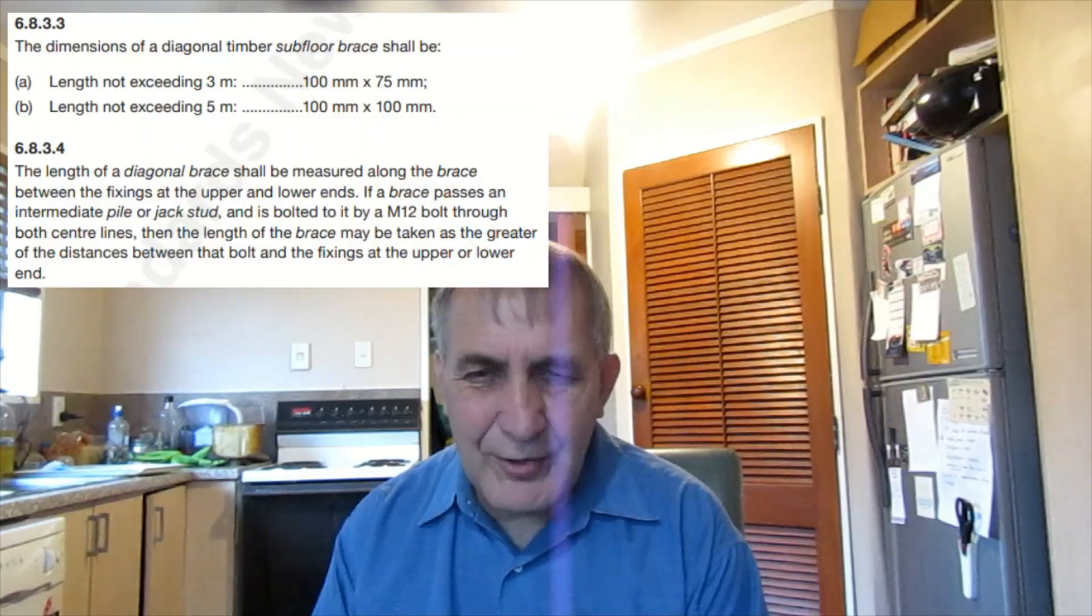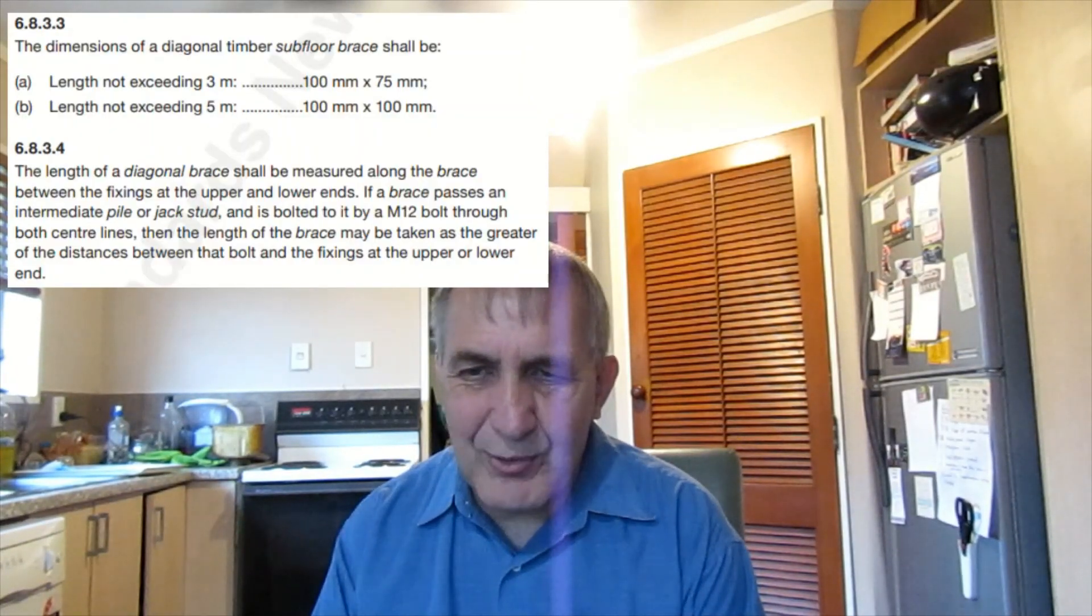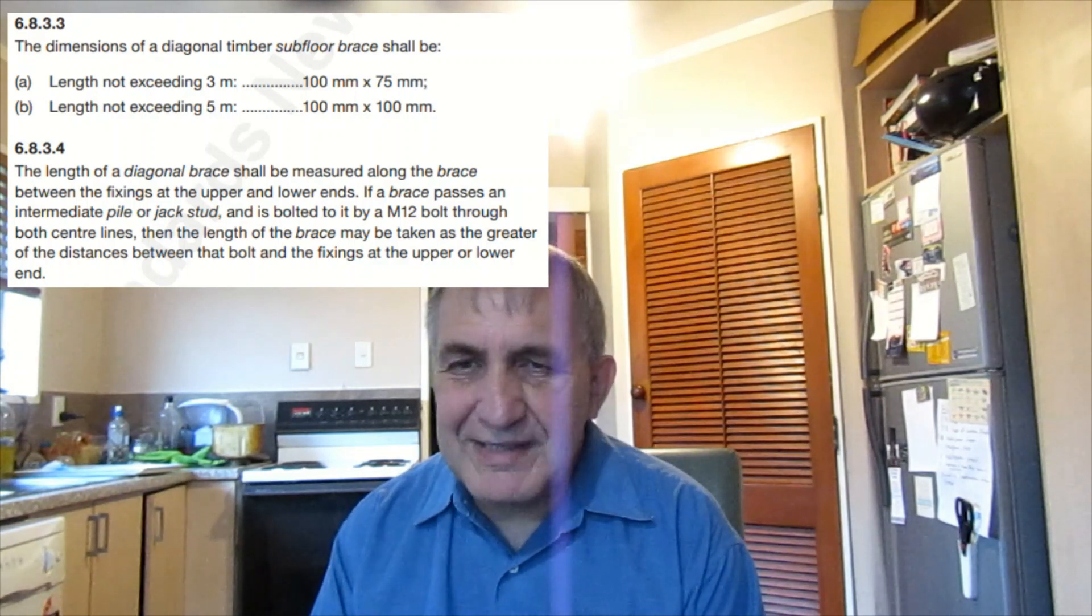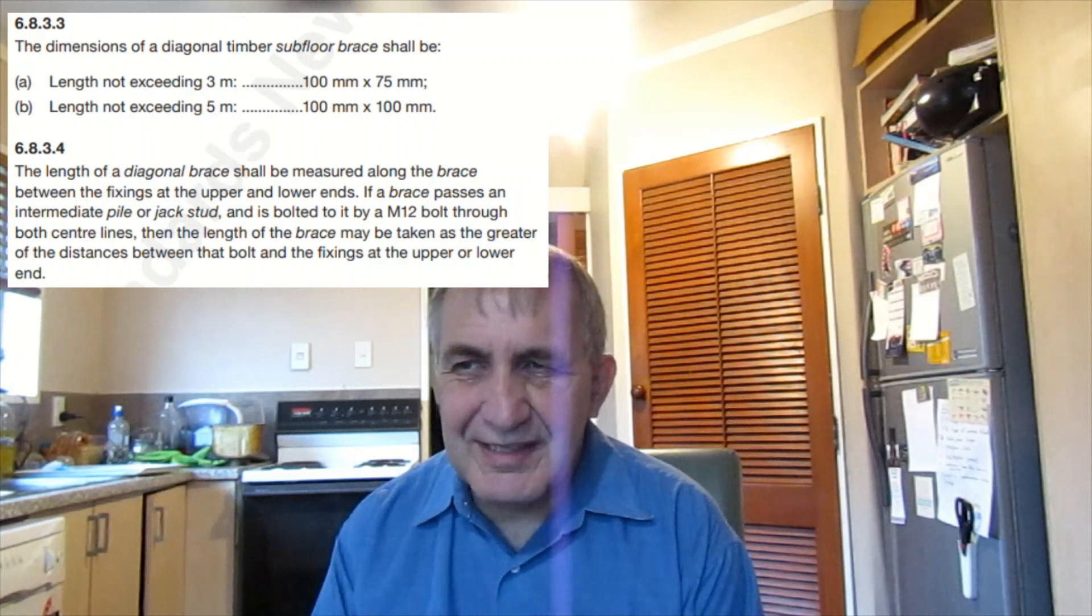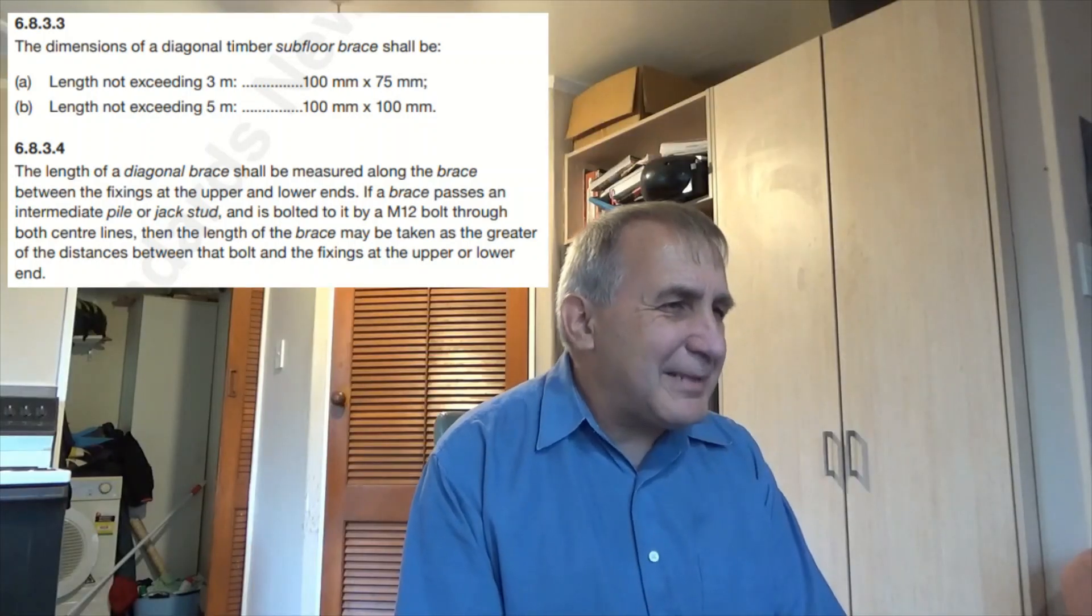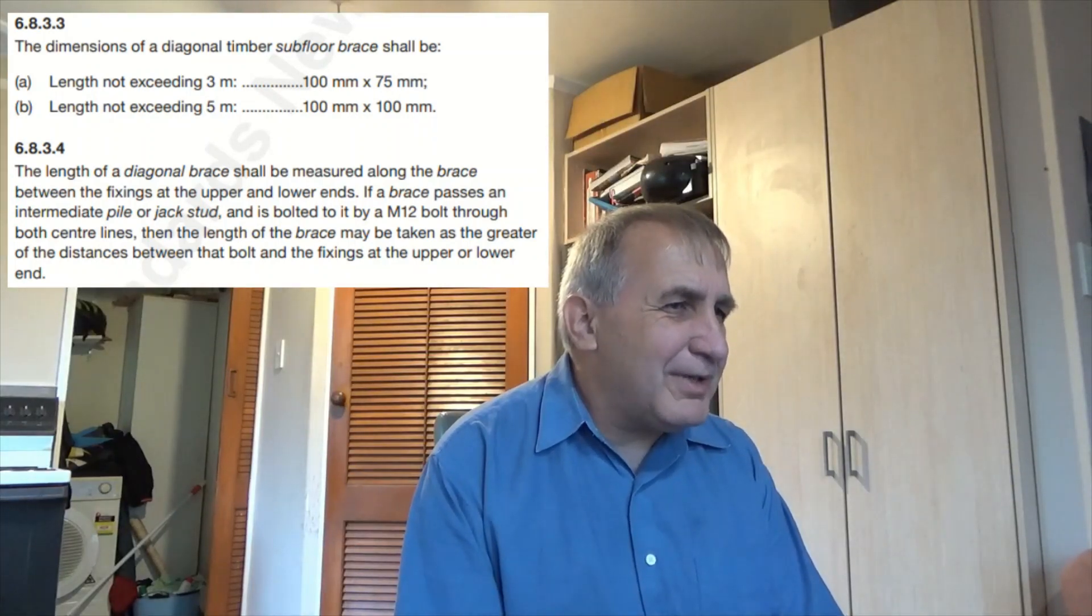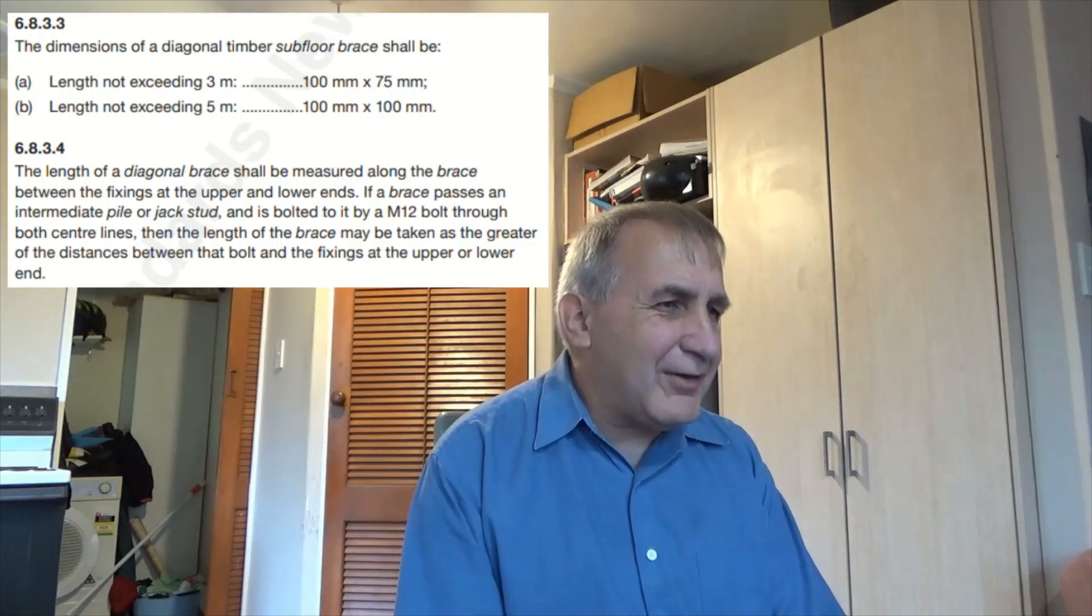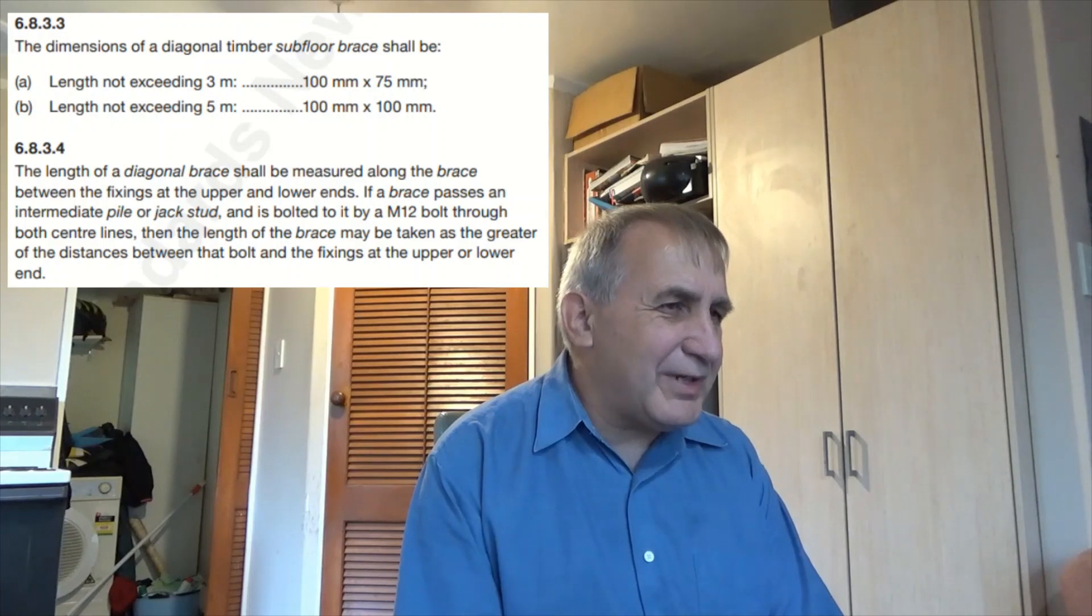The length of the bracing can't be more than five meters and must be one continuous length. If the length of bracing passes through an intermediate pile and is fixed with M12 fasteners then the length of the bracing is calculated from the intermediate fixing point to either the upper or lower connection.